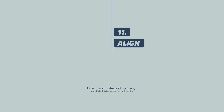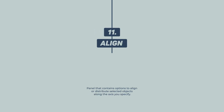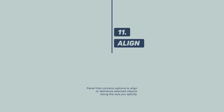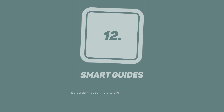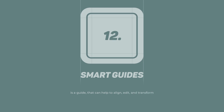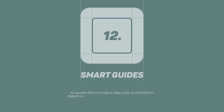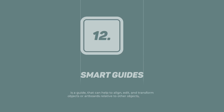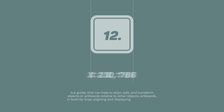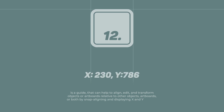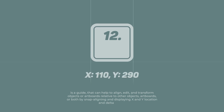Align — a panel that contains options to align or distribute selected objects along the axis you specify. Smart Guides — a guide that can help to align, edit, and transform objects or artboards relative to other objects, artboards, or both, by snap aligning and displaying x and y location and delta values.